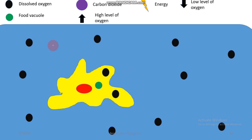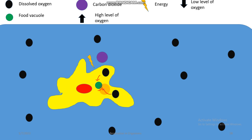Now the actual respiration process takes place. The green structure is the food vacuole, where food is stored in amoeba. Oxygen breaks down the food present in the food vacuole, producing energy, carbon dioxide, and water. Two oxygen molecules entered the body and have been used up to break down the food.